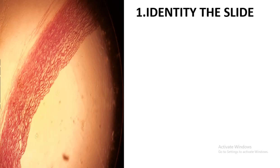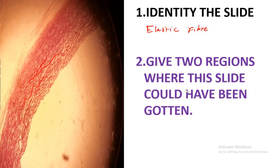Let's quickly move on. This next slide is just an elastic fiber. If you look at these elastic fibers, they are moving in a wave-like motion and there are few cells in them. This slide is likely to be that of an artery or a vena cava. You can talk about the walls of the artery or the veins as the regions where this slide could have been obtained.